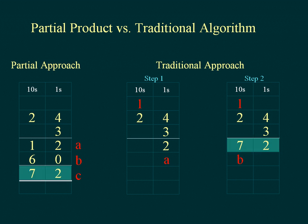Compare the final results from the partial product approach and the traditional algorithm. Can you explain the meaning of the 1 at the top of the tens column? How is it used in the computation of the partial product in the tens column? Relate the answer in both cases to the array of base 10 blocks.